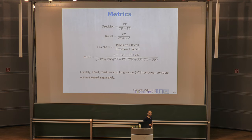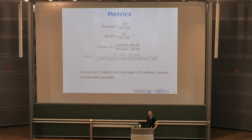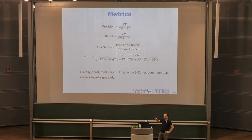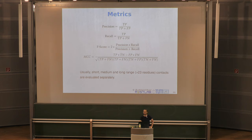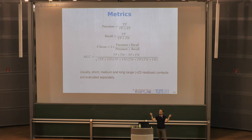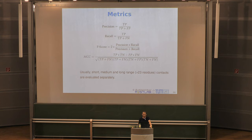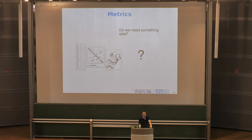How does CASP compare different methods? For binary contact prediction you have the usual suspects: precision, recall, F-score, and MCC (Matthews Correlation Coefficient), which has the advantage of also factoring in true negatives. We differentiate between short, medium, and long-range contacts. We're mostly interested in long-range contacts — everything above a sequence separation of 24 residues — because the further apart two residues are that form a contact, the better the constraint.